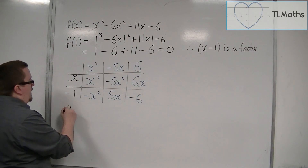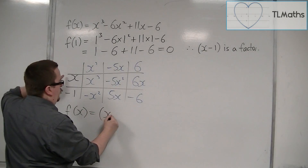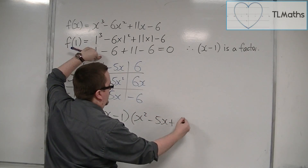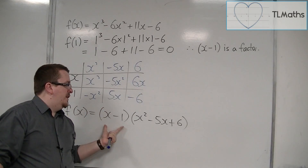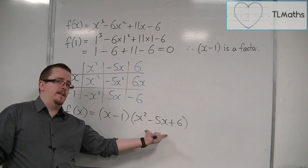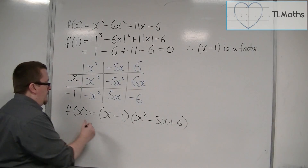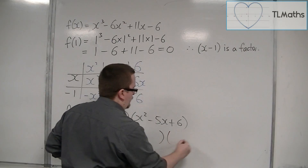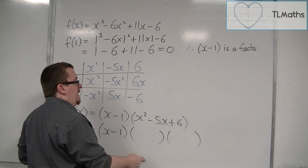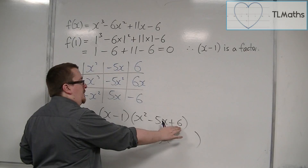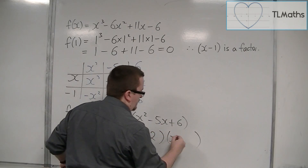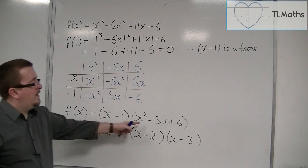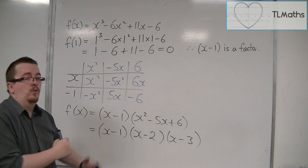We can now write f(x) as x minus 1 times this quadratic — the cubic as a product of a linear term and a quadratic term. Now all I need to do is factorise this quadratic. We need two numbers that multiply to make 6 but add to make minus 5, and that's minus 2 and minus 3. As you can see, if you can get down to a quadratic that factorises, this is a whole lot easier.